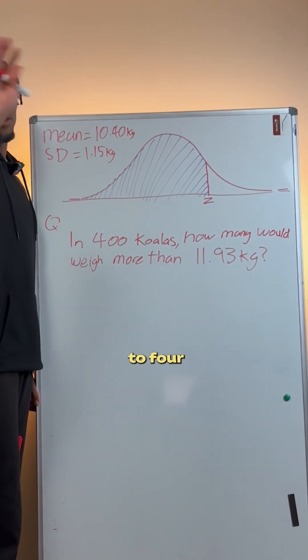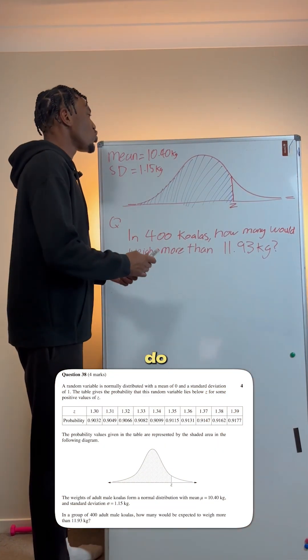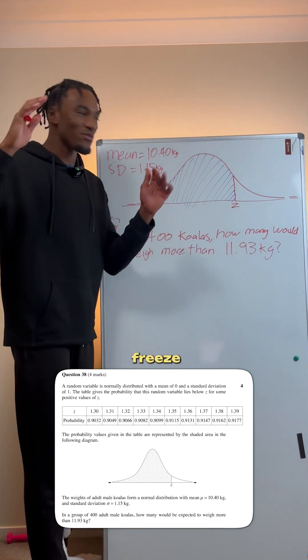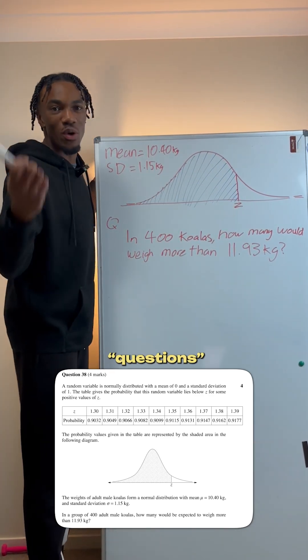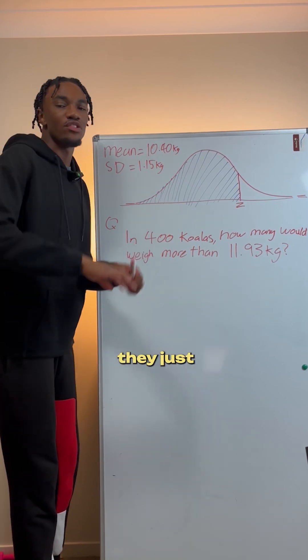Forget this step in HSC standard maths and say goodbye to four marks instantly. What a lot of students do when they see these problems is they panic, they freeze, and they're like, I don't know how to do z-score probability questions. If they've never seen something before, they just leave it blank.